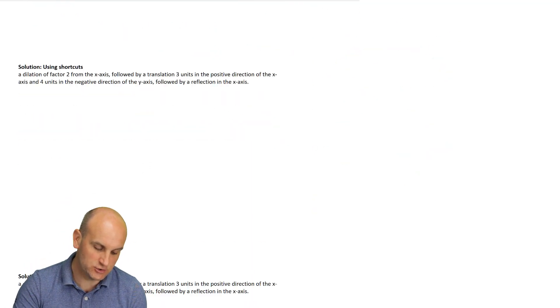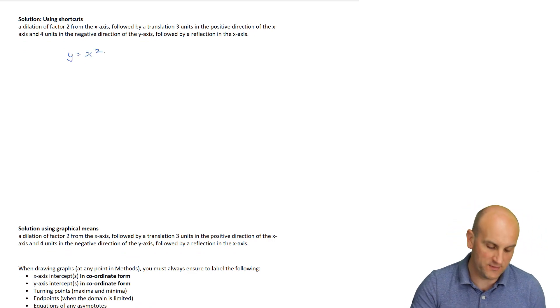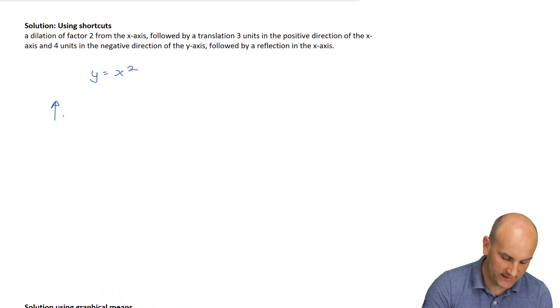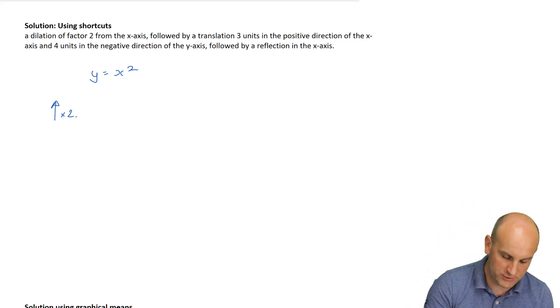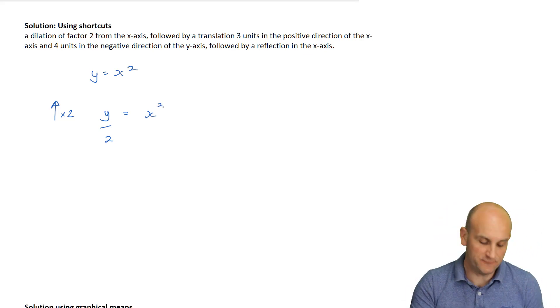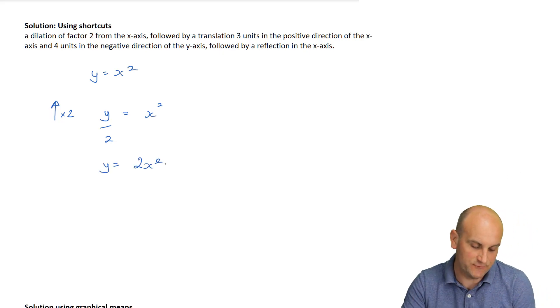Now let's try it using shortcuts. Okay, a dilation. So we started off with y was equal to x squared. So a dilation of factor 2 from the x-axis. So dilation of factor 2 from the x-axis. We know that for the shortcut, when we are dilating factor 2, we're replacing y with y on that dilation. So I'm now going to replace y with y on 2 becomes equal to x squared.